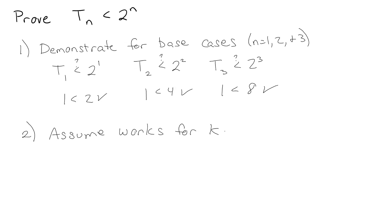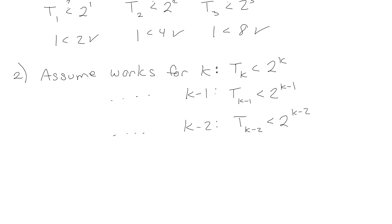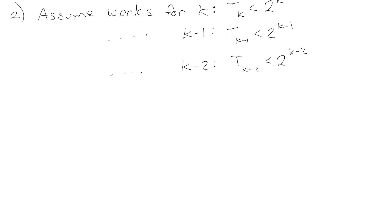So we want to assume that it works for K, so we have to assume that T sub K is less than 2 to the K. We want to assume that it works for K minus 1, and we want to assume that it works for K minus 2. See this is where it gets kind of fun. Okay, so we want to assume that all of those are true.